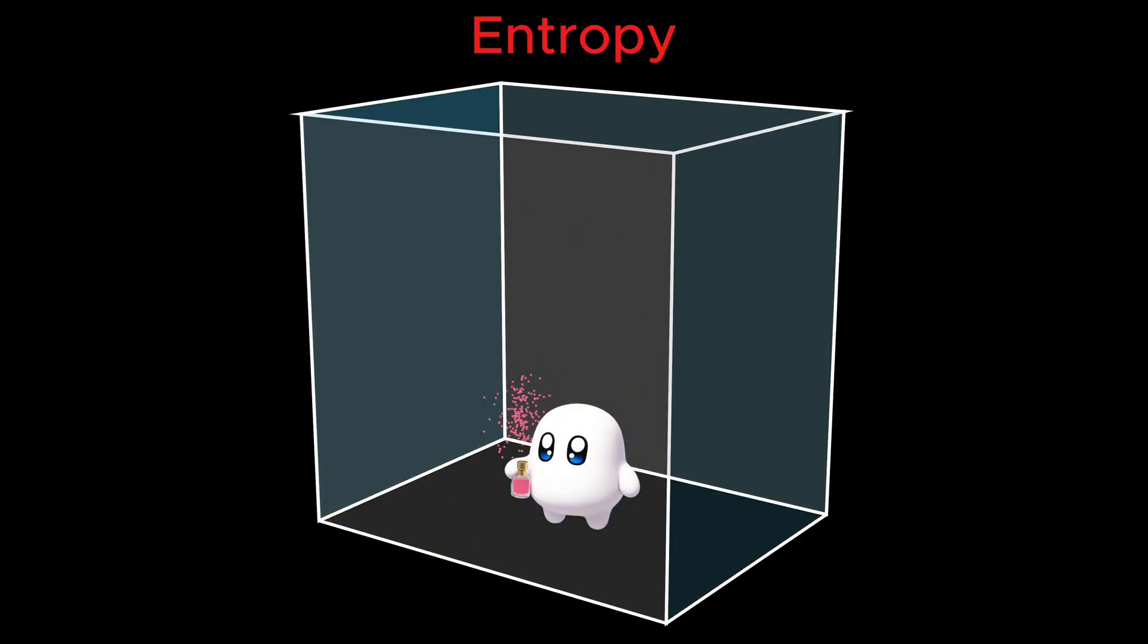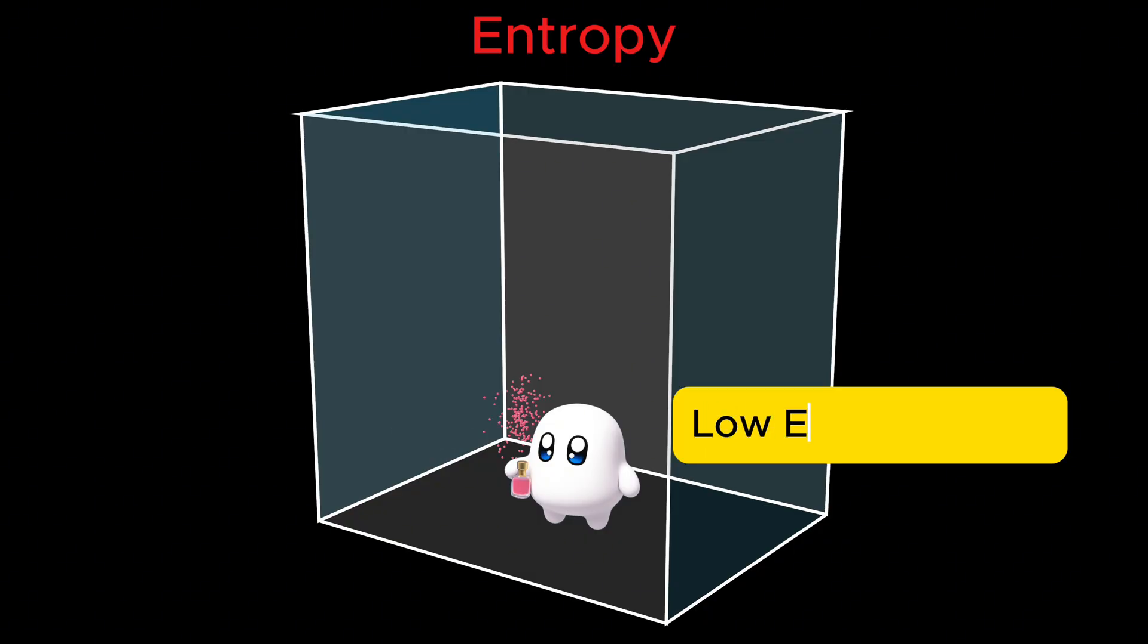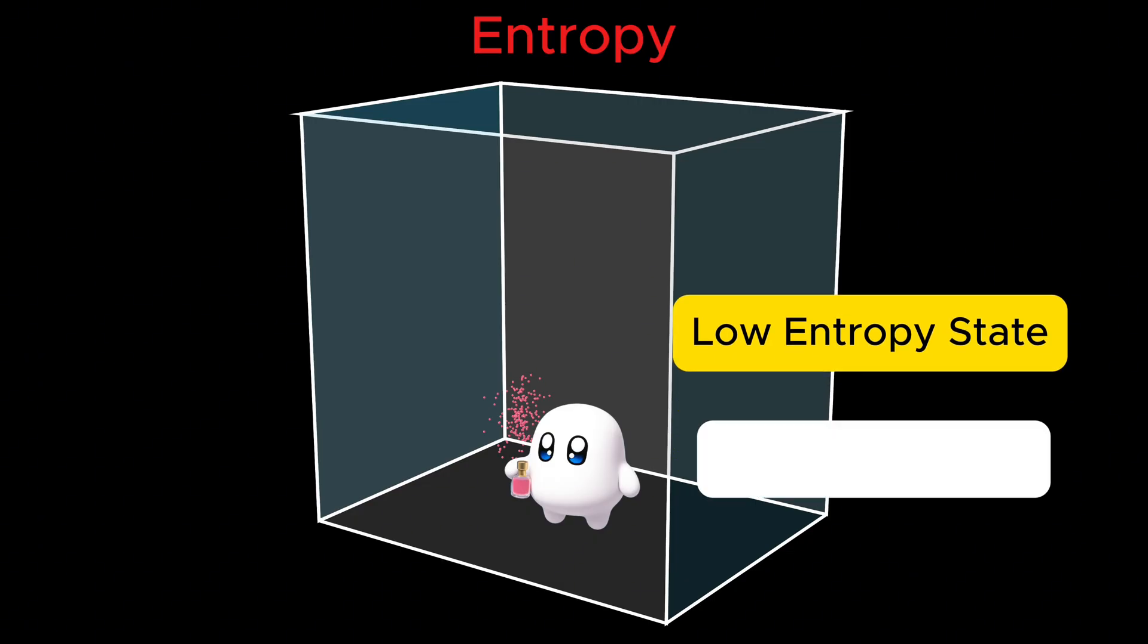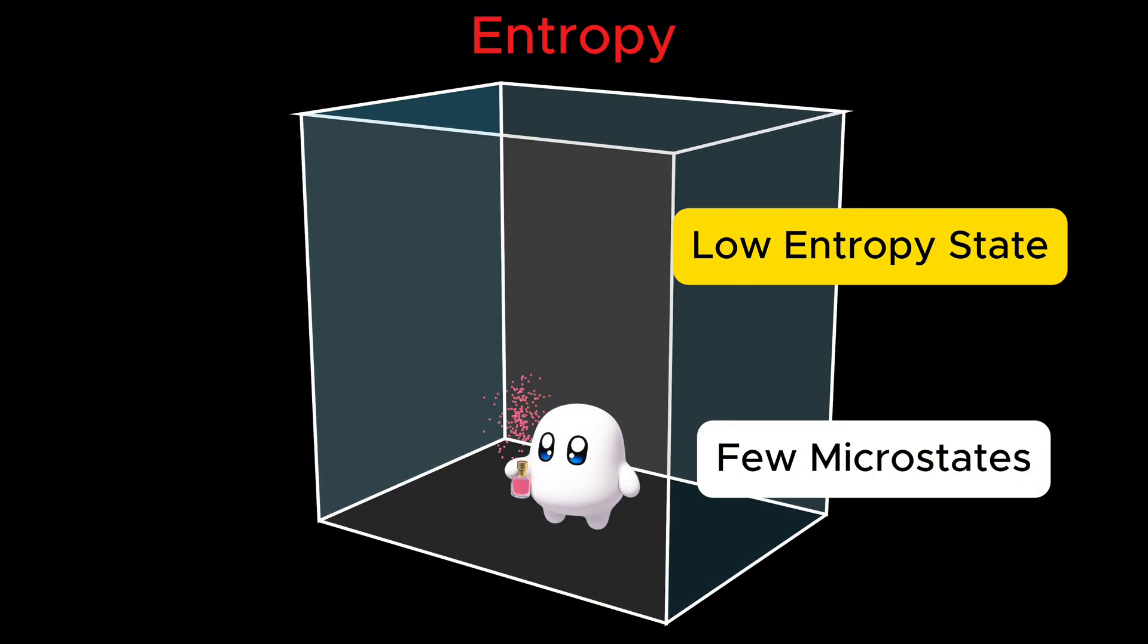At the moment you open the bottle, almost all perfume molecules are confined to one tiny region near the nozzle. It's a very ordered arrangement. The molecules are clustered, almost no variation in their location. There are very few ways the molecules could be arranged while still looking essentially like all the perfume is in this tiny corner. This is what physicists call a low-entropy state. When there are few microscopic possibilities to arrange the molecules' positions, entropy is low.